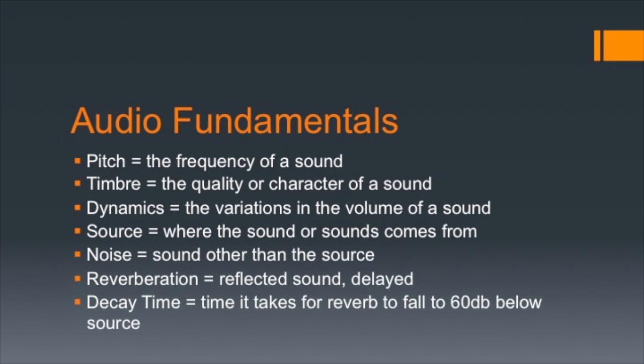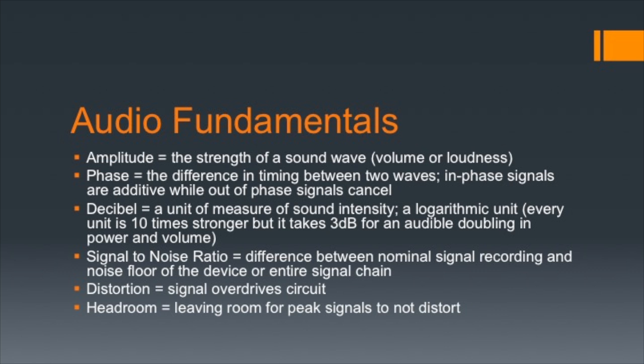Since volume has a logarithmic relationship to distance and sound travels at approximately 1100 feet per second, decay and time are used to characterize reverb. You'll see references to RT60 time in audio literature — decay time is the time it takes for reverb to fall 60 dB below the source volume. The delay part, or echo, is how long it takes for the first reflection to reach our ears. Phase is the difference in timing between two waves. Two signals in phase add together and are louder; two signals out of phase cancel each other out.